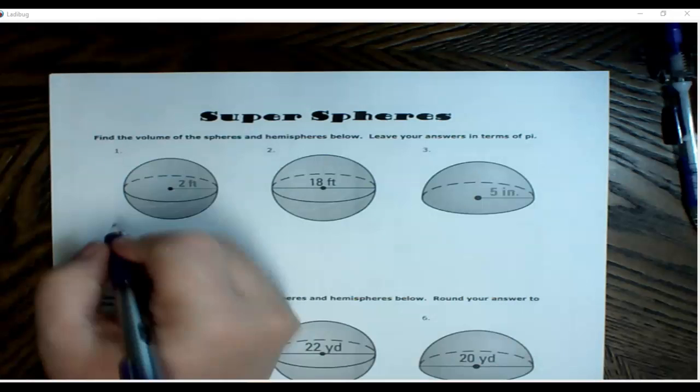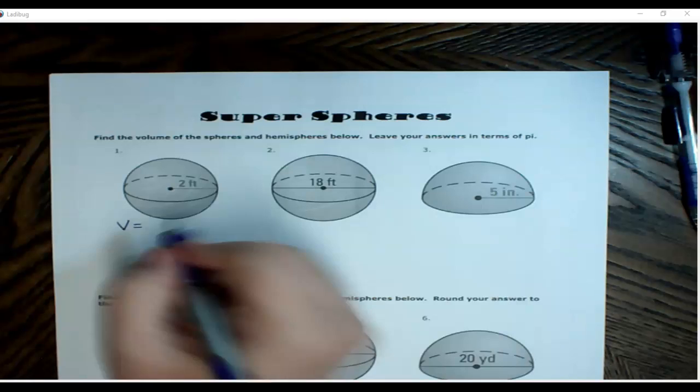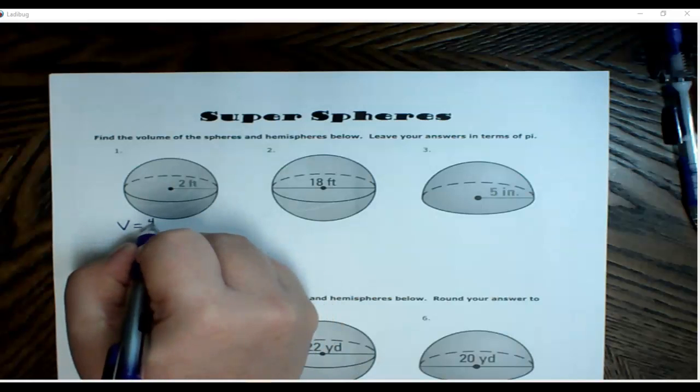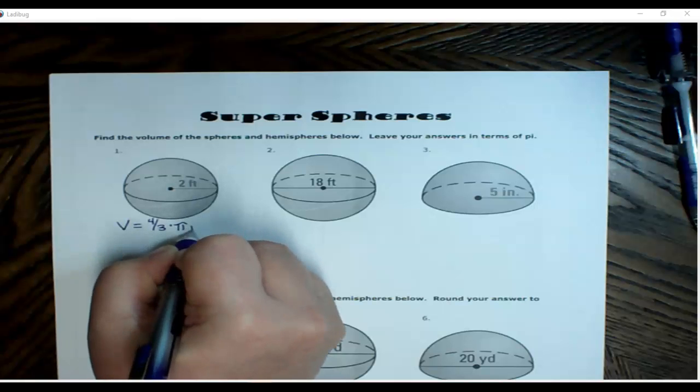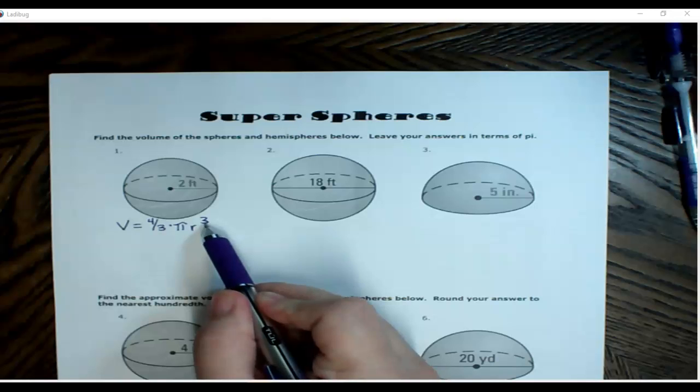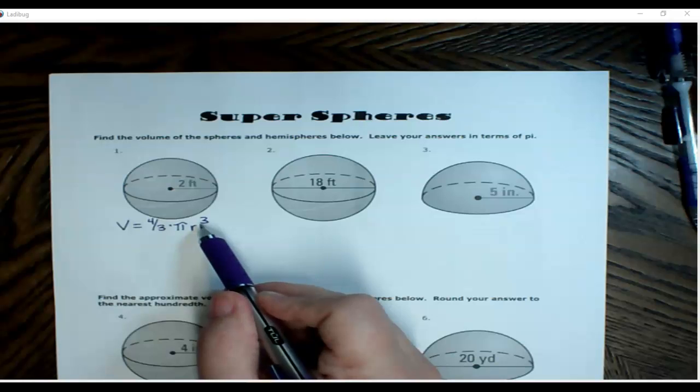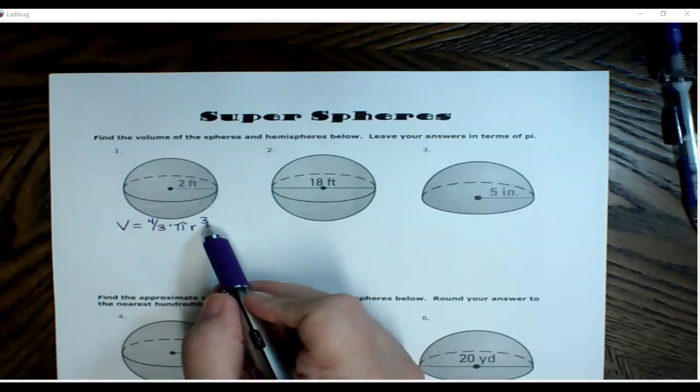When we look at the formula chart to find volume of a sphere, V equals, what's my formula? Four-thirds times pi r cubed. Make a mental note, we are cubing this. We're not doing pi r squared, that would be area of a circle, but this is three-dimensional circle, so we have to cube it.